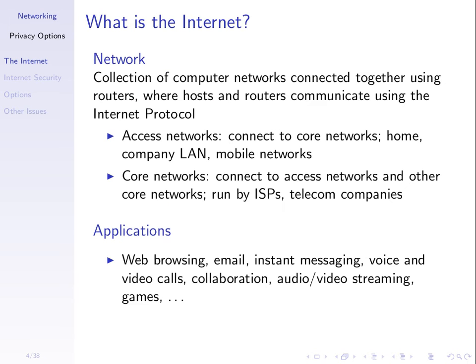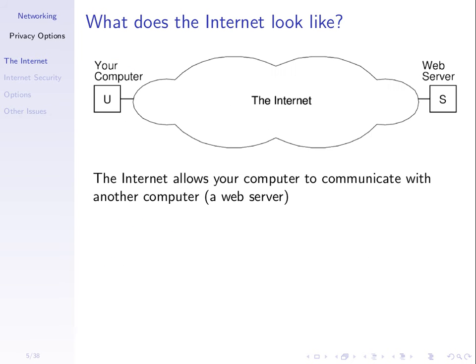What is the internet? For our examples when we try to explain the options, we'll have a model of the internet. Here's a simple model: there's you on your computer, and via the internet — a network of computers — you often access a server to achieve some aim. We'll use a web server in our examples, but it could apply to others. So our model is that your computer communicates across the internet to a server.